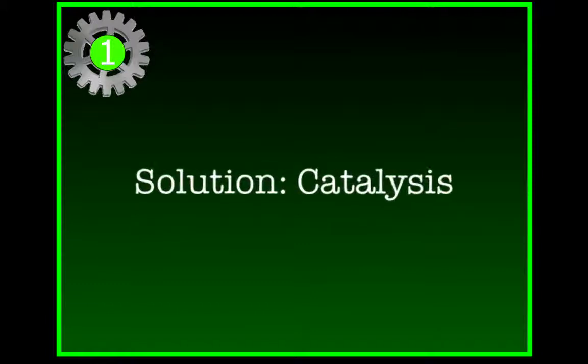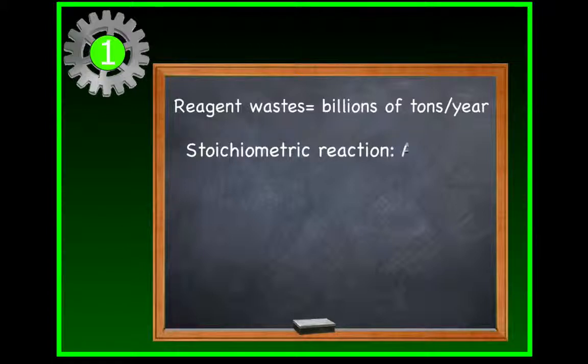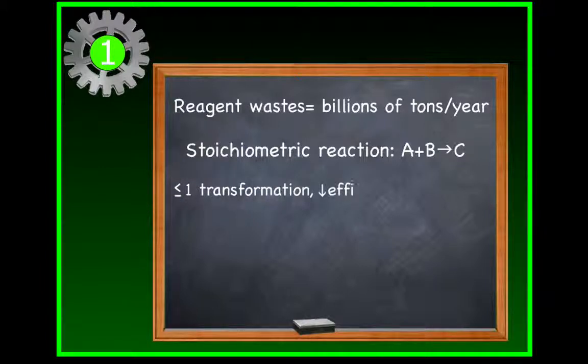Another way we can eliminate waste is by using catalysts to promote chemical reactions. A great deal of chemical waste in the world results from inefficient use of stoichiometric reagents. Stoichiometric reagents essentially take a brute force approach to chemical conversion.